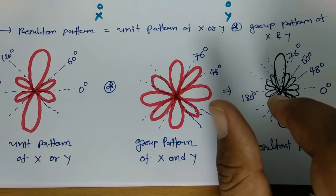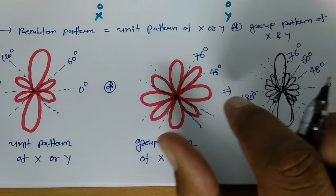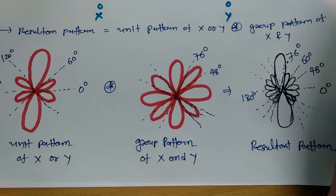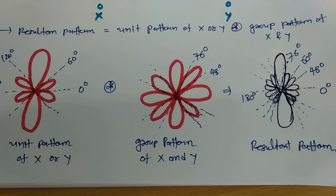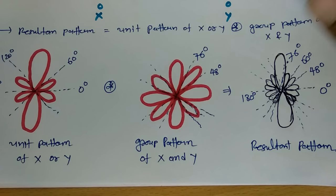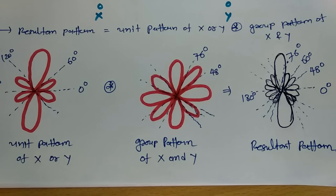So the basic process of pattern multiplication is: unit pattern into group pattern. And first of all, plot all those nulls which are there in the unit pattern as well as group pattern. Thank you so much for watching this video. You can suggest videos which are required to complete this Antenna and Wave Propagation playlist. I have recently made a website regarding engineering fundamentals — the link is attached in the description, where you will find all material I am teaching on YouTube, along with many more courses. Keep watching and keep sharing with your friends. Thank you so much.